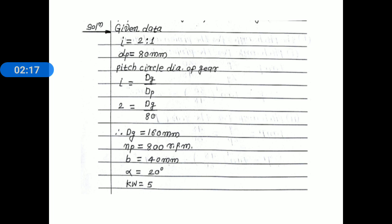Using the velocity ratio and pitch circle diameter of the pinion, we get the pitch circle diameter of the gear. The relation is: velocity ratio i equals D sub xg divided by D sub xp. So 2 equals D sub xg divided by 80, giving D sub xg equal to 160 millimeters. Speed of pinion is 800 rpm, face width b is 40 millimeters, pressure angle alpha is 20 degrees, and power is 5 kilowatts.